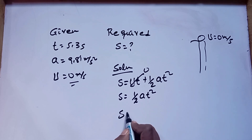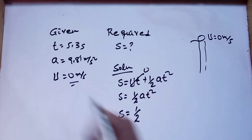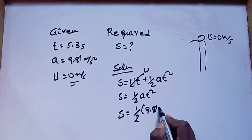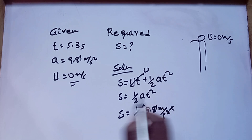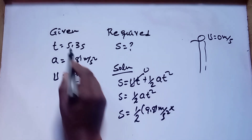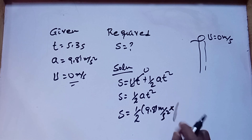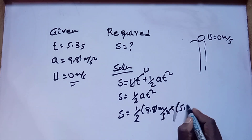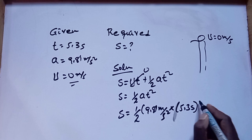Since initial velocity is zero, the equation simplifies: height of the building is equal to 1 over 2 times 9.81 m/s² times (5.3 seconds) squared.